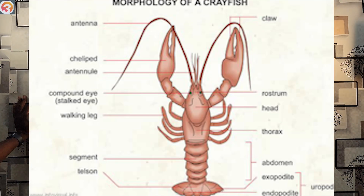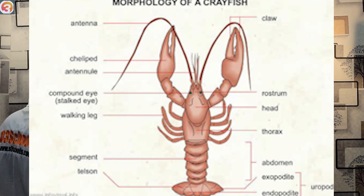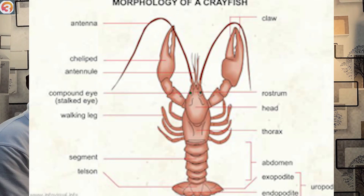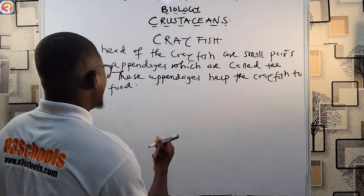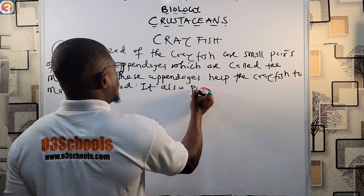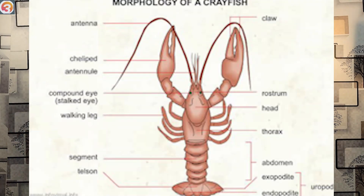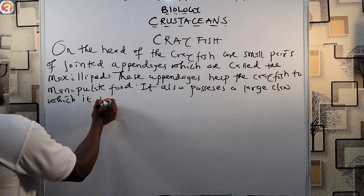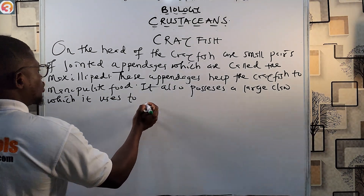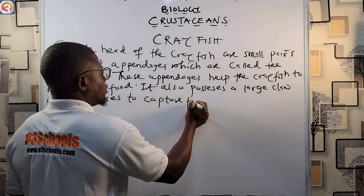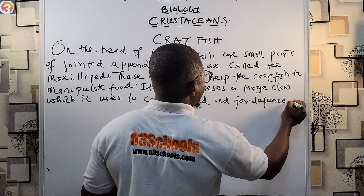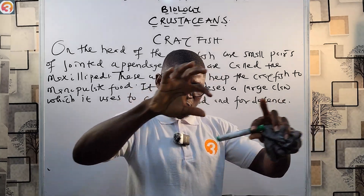The crayfish also possesses a large claw, which helps it to capture food and for defense — just like how animals use claws for defense. This large claw is used to capture food and for defense.